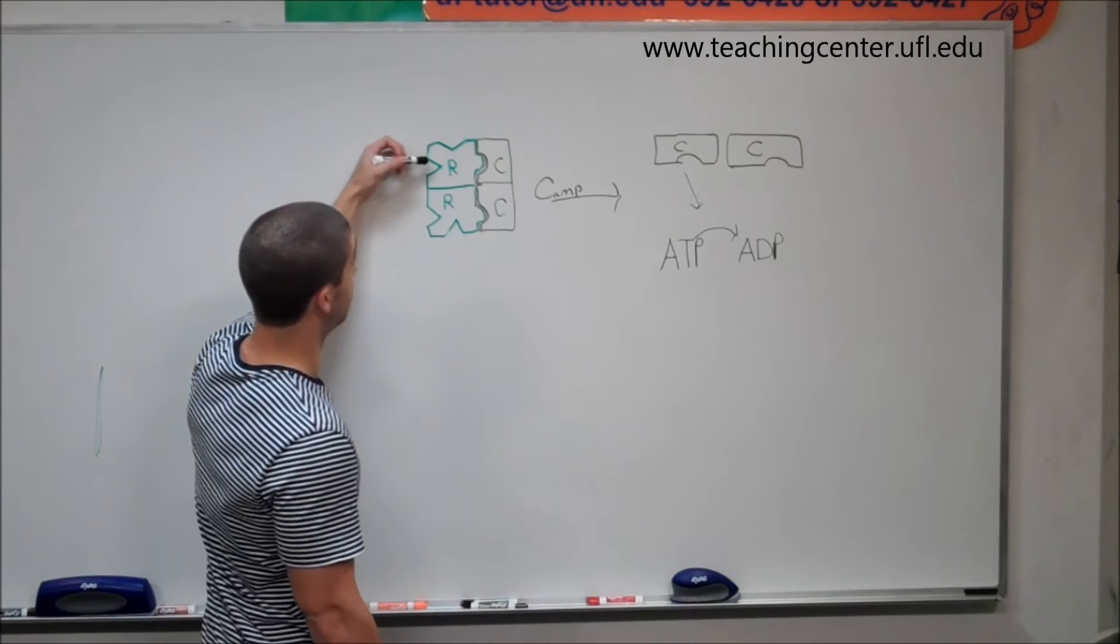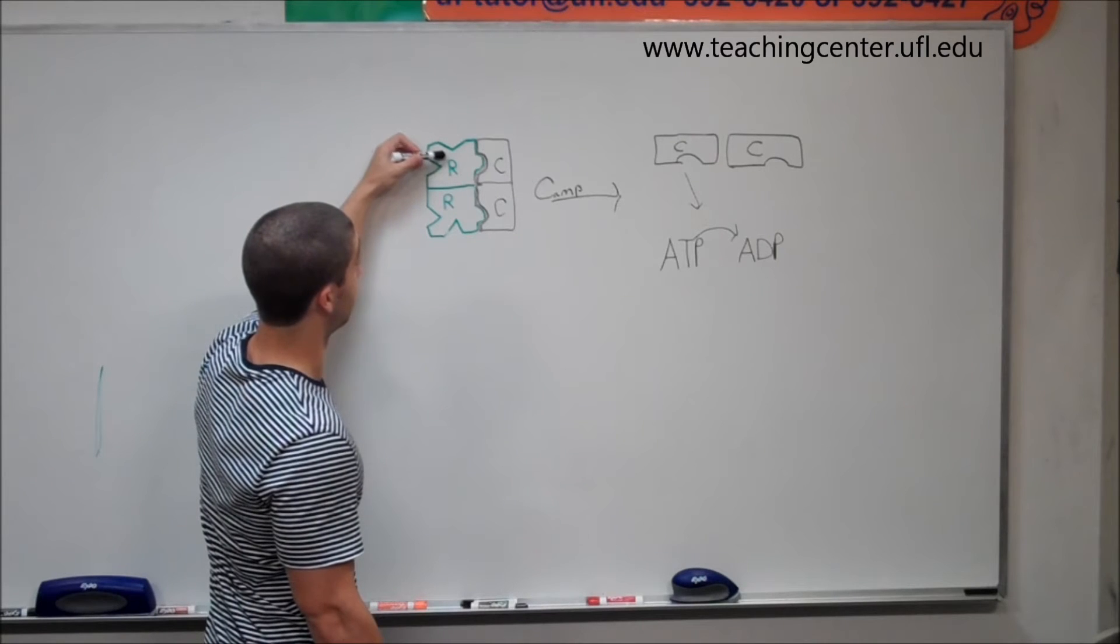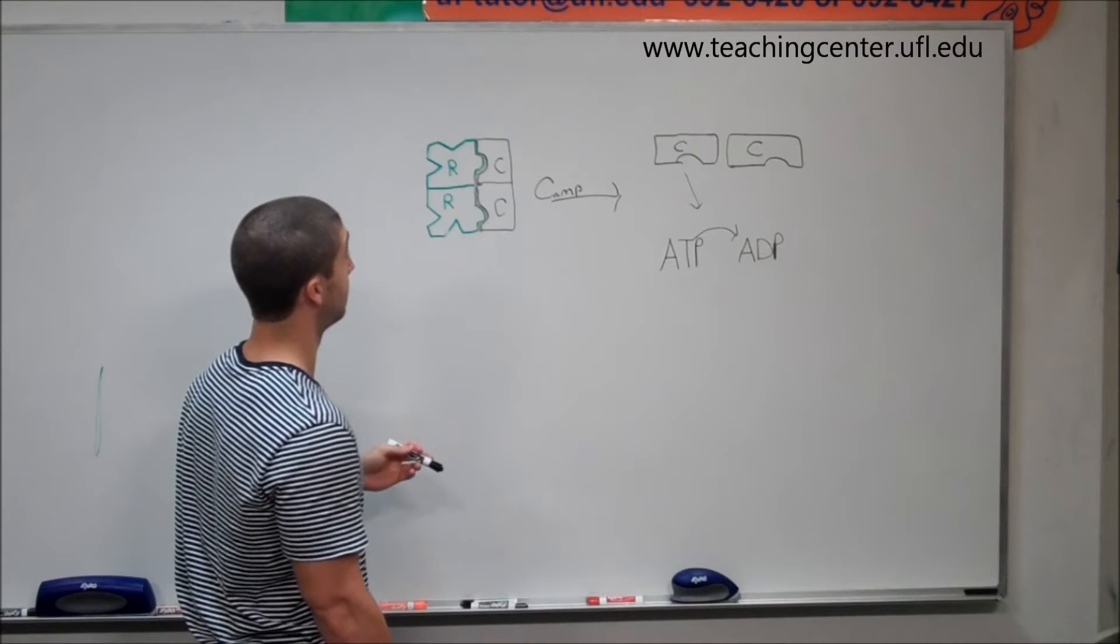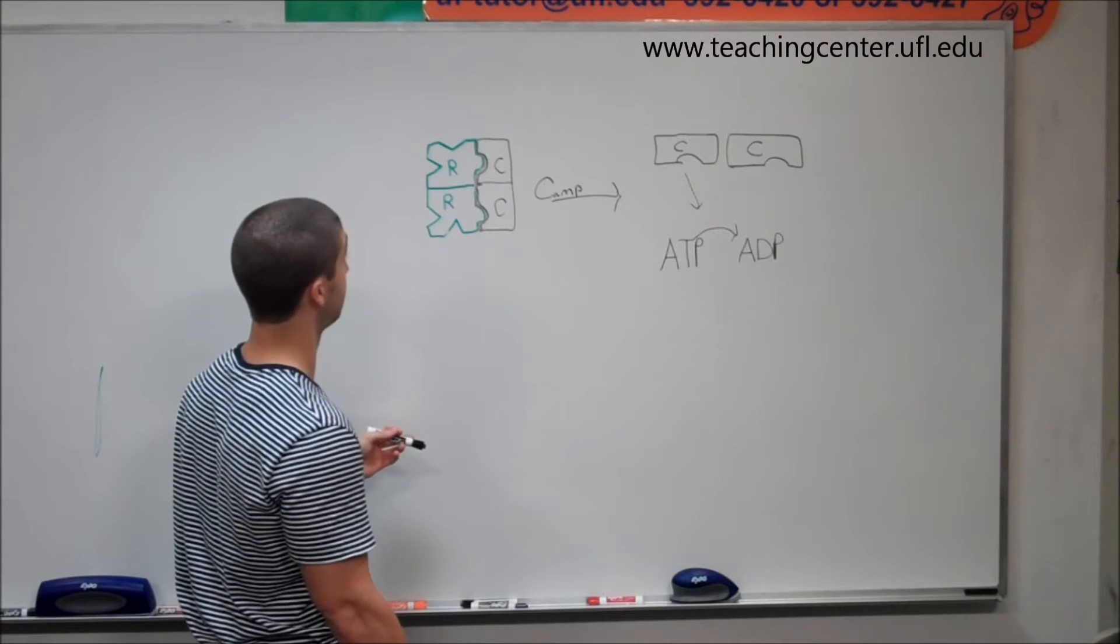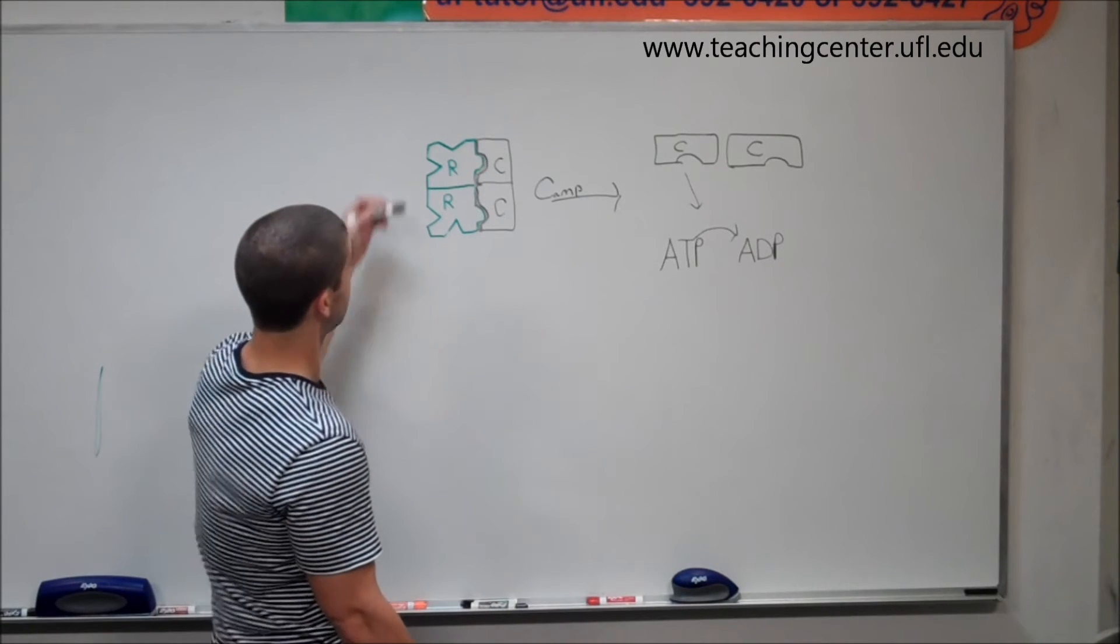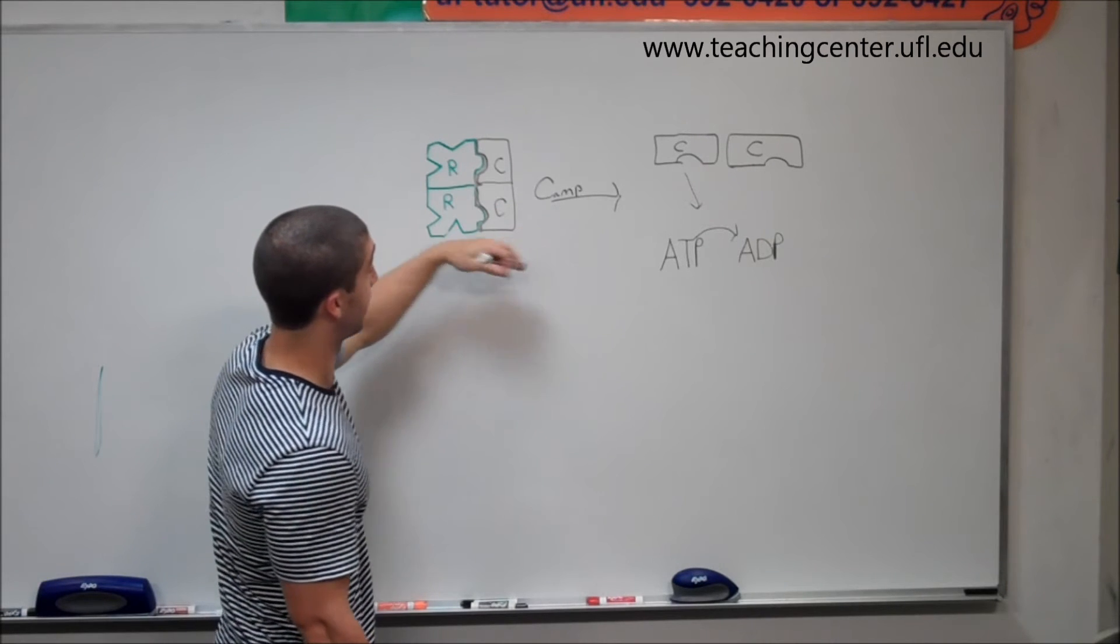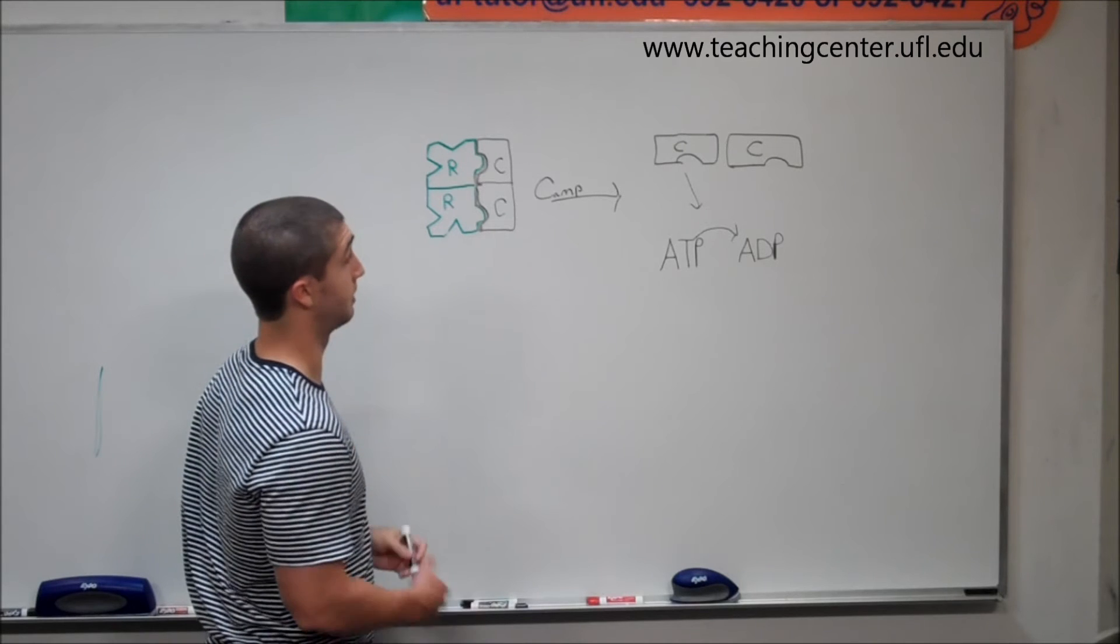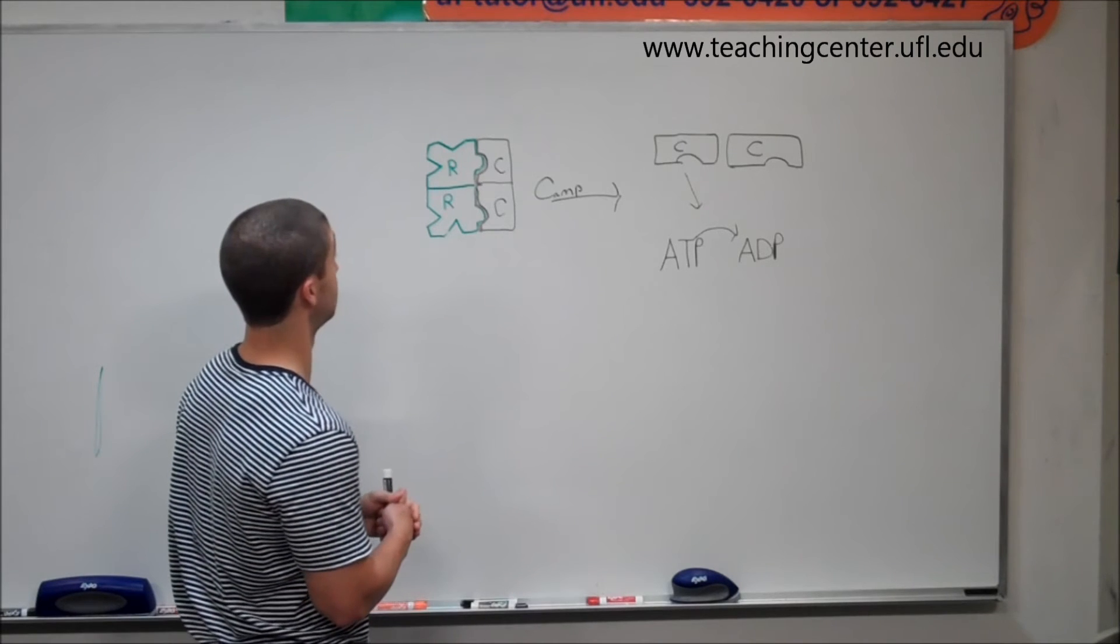So if we have a mutation, let's say in the R subunit, it could inhibit protein kinase altogether because you wouldn't have cyclic AMP binding. It could inhibit the binding sites at the R subunit, which would completely deactivate protein kinase A.